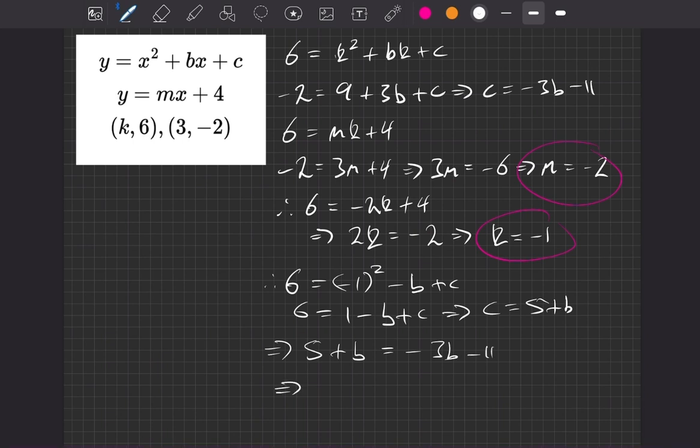So if we rearrange for b, what do we get? Well, we have 4b, adding 3b, and if we take away the 5 now, that's equal to minus 16. So b, we know, is equal to minus 4.